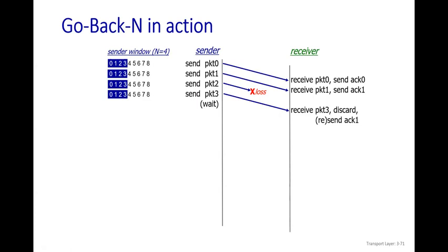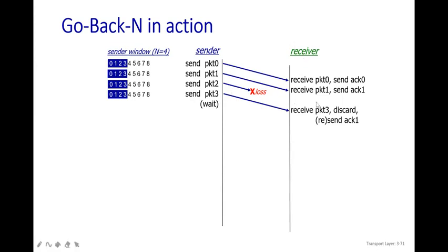The receiver receives packet zero and sends acknowledgement zero successfully. Packet one is also received and acknowledgement one is sent. But packet two is lost somewhere. The receiver just waits. Packet three is also sent — it is received at the receiver side but is discarded, because without packet two, the sequence is out of order and the receiver cannot send an acknowledgement for it.